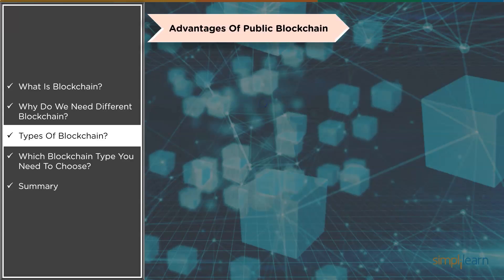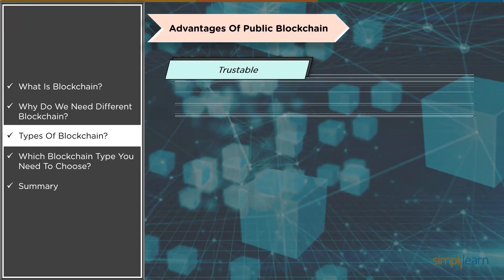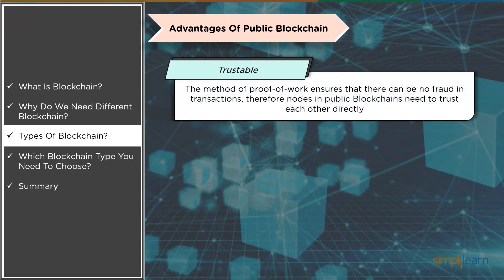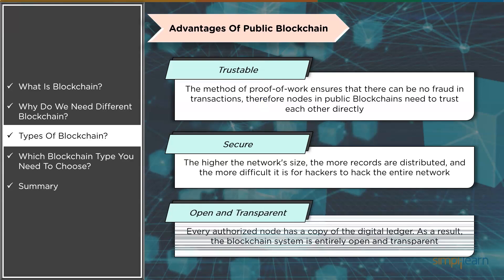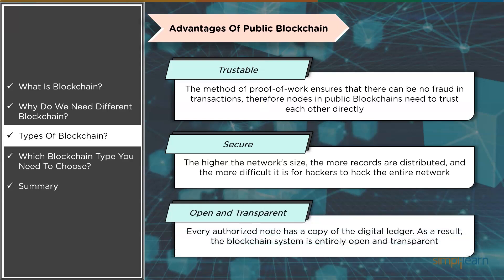Looking at the advantages of public blockchain — first is trustable: nodes do not need to know or trust each other because the proof-of-work procedure ensures that no transactions are fraudulent. As a result, one can trust public blockchain without having to trust individual nodes. Second is secure: a public network can have as many participants or nodes as it wants, making it a secure network. The higher the network size, the more records are distributed and the more difficult it is for hackers to breach the network. Third is open and transparent: the data on a public blockchain is transparent to all member nodes, and every authorized node has a copy of the blockchain records or digital ledger, making the system entirely open and transparent.